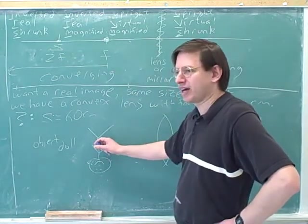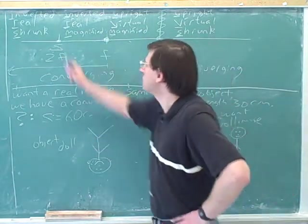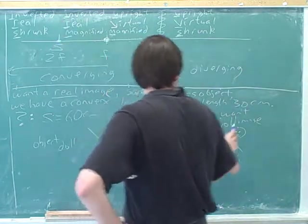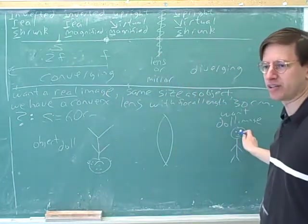Because if we orient the object like this, we know that we will be inverting that, because we're in this region. And then the doll will look the way we want it to look.